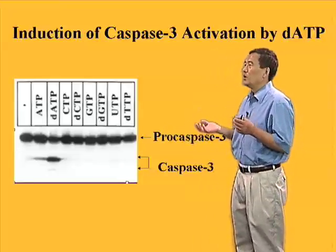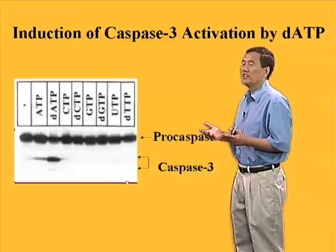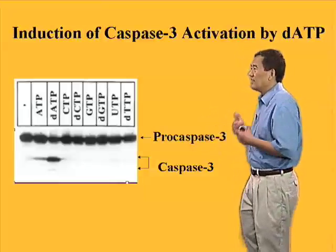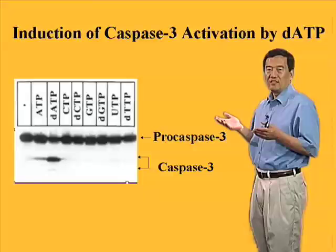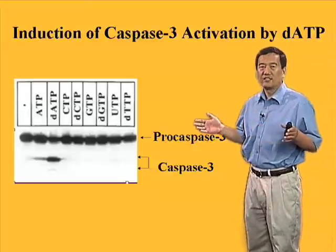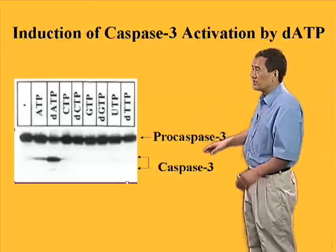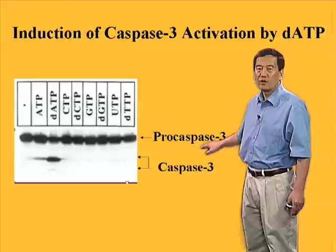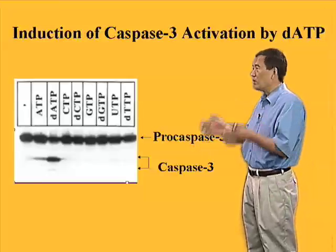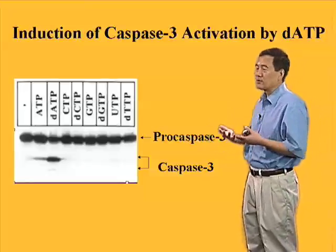This means that with addition of dATP, we can trigger apoptosis basically in vitro, in a test tube. This gave us an assay allowing us to fractionate the cell extracts and reconstitute the procaspase-3 activation reaction, so we could identify the components as well as the reactions that drive caspase-3 activation.